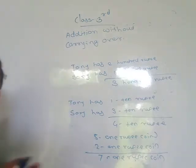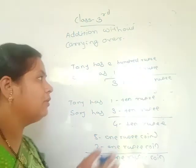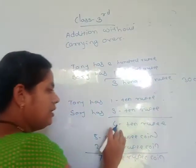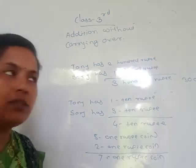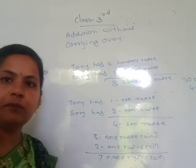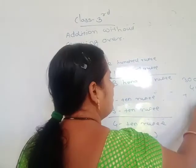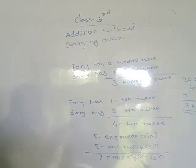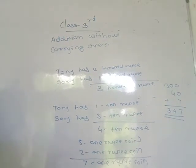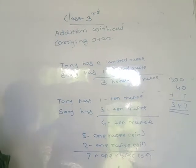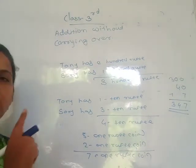Then total how many rupees? We have 3 hundred-rupee notes, meaning 300. Then 4 ten-rupee notes, meaning 40. And 7 one-rupee coins, meaning 7 rupees. Therefore the total is 347 rupees.